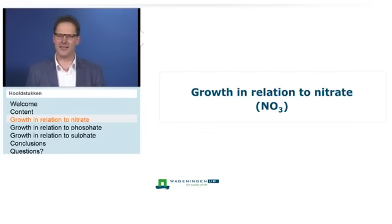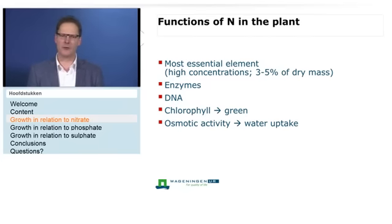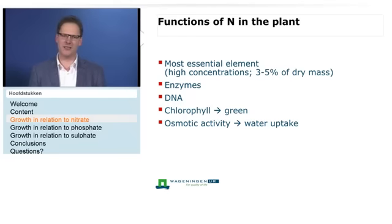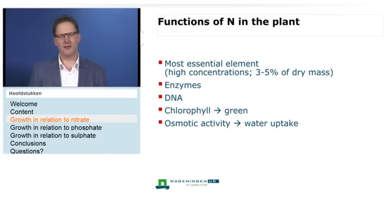Let's look at the major functions of nitrogen in the plant. Nitrogen is definitely the most essential element — you will find it in high concentrations, usually about 3 to 5% of dry mass. It's in enzymes such as the rubisco enzyme, which is very important in photosynthesis. It's in DNA, the genetic material of the plant. It's in chlorophyll, which makes the plant green. It also has a role in osmotic activity for water uptake.